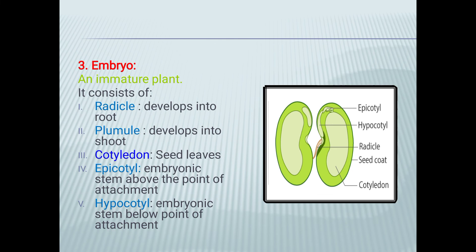Embryo is the immature plant. It consists of: radicle, which develops into the new root; plumule, which develops into the new shoot; cotyledons, which are called seed leaves; epicotyl, which is the embryonic stem above the point of attachment of cotyledons; and hypocotyl, which is the embryonic stem below the point of cotyledon attachment.